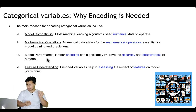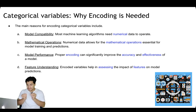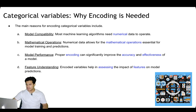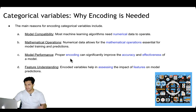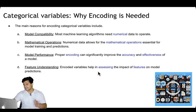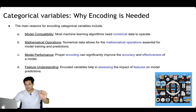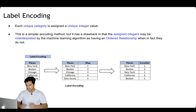Similarly, model performance can significantly improve because the model understands numbers, and if you encode categories in an efficient way that makes it easier for the model to learn, you will see your performance significantly increase and accuracy go up. Also, encoded variables help in feature understanding — assessing the impact of a categorical feature on model predictions.